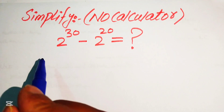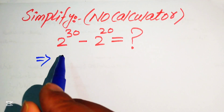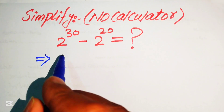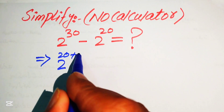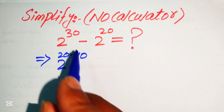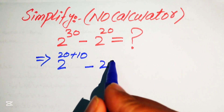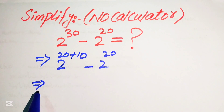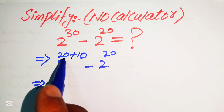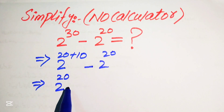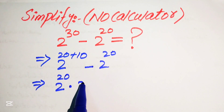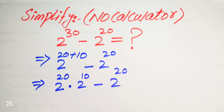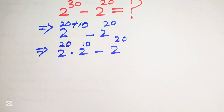The very first step is to write 2 to the power of 30 as 2 to the power of 20 plus 10, since 20 plus 10 equals 30. Then minus 2 to the power of 20. After that, we use the exponent law to break this exponent and write it as 2 to the power of 20 multiplied by 2 to the power of 10, minus 2 to the power of 20.